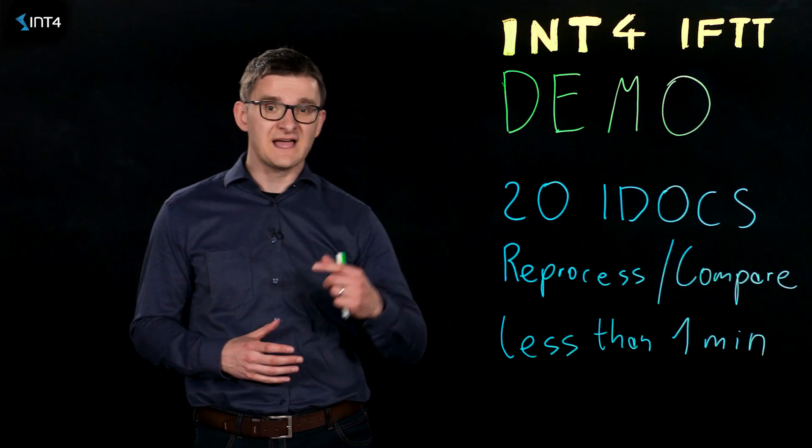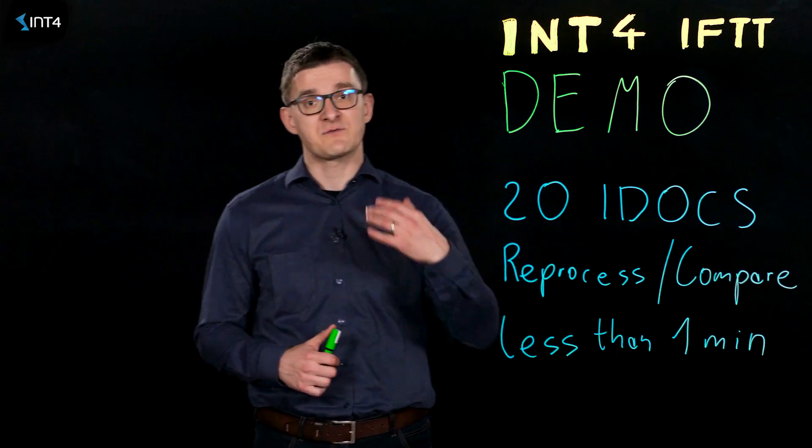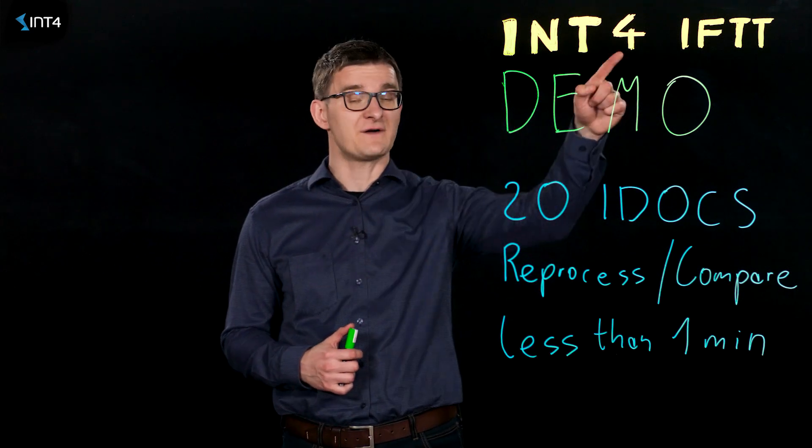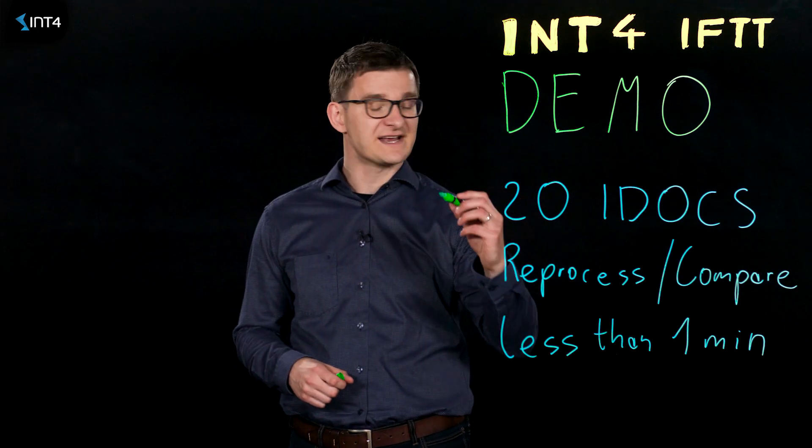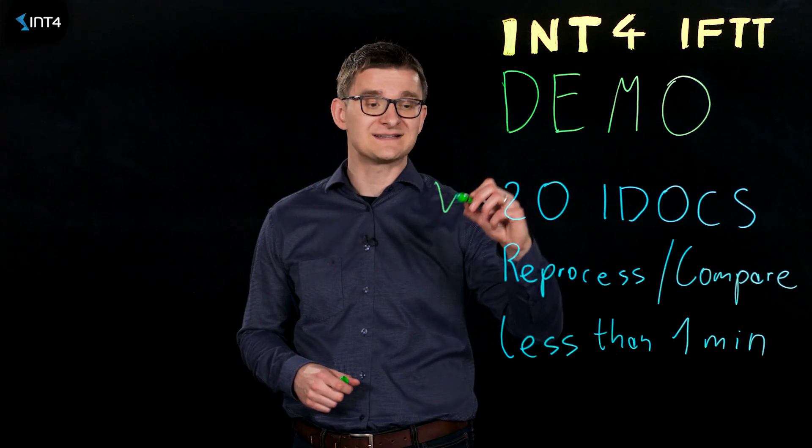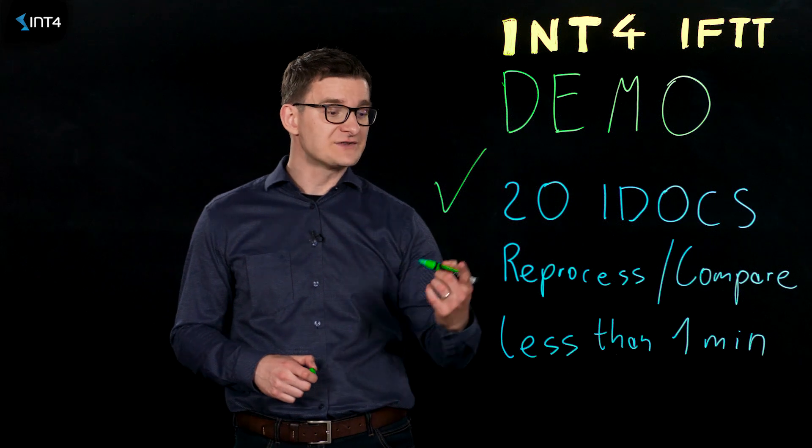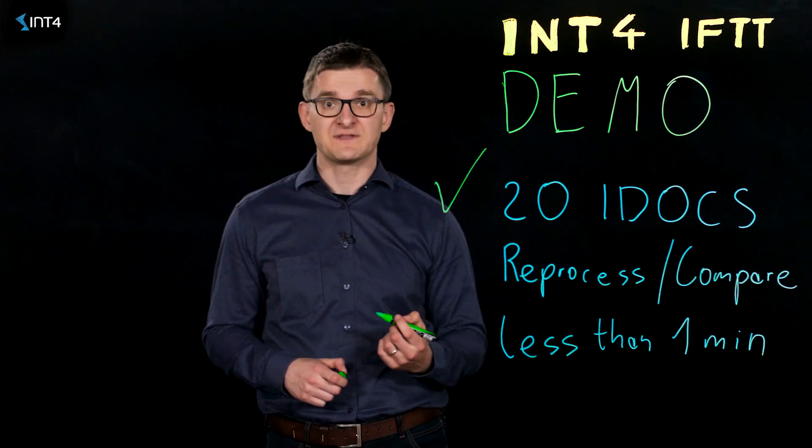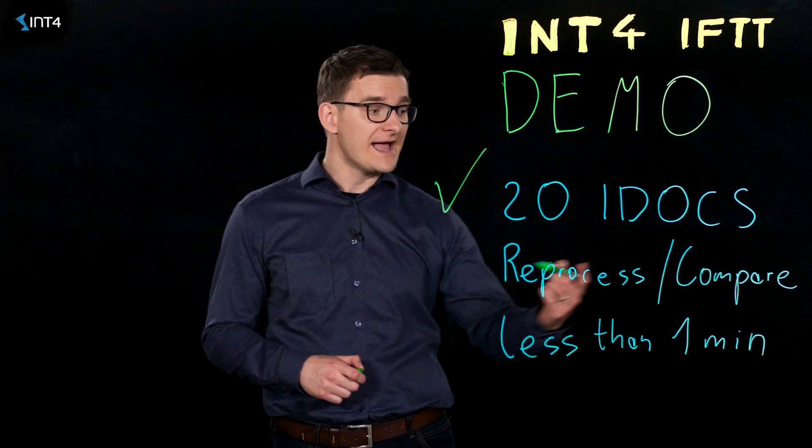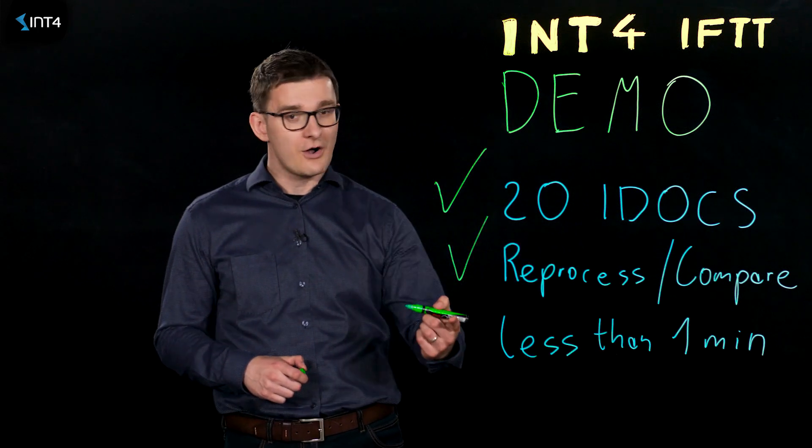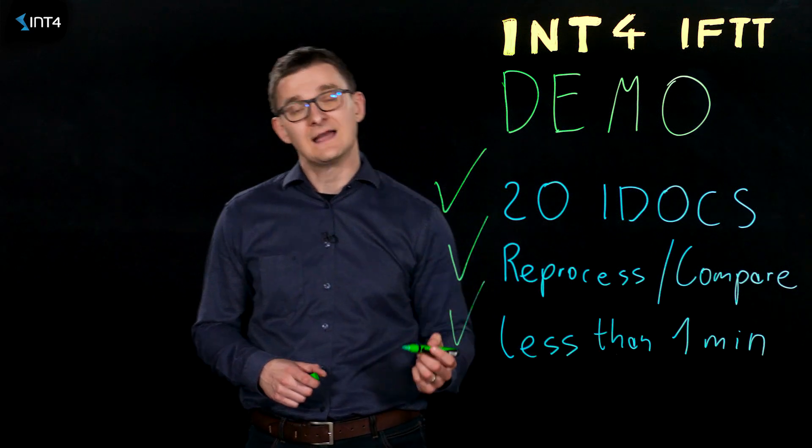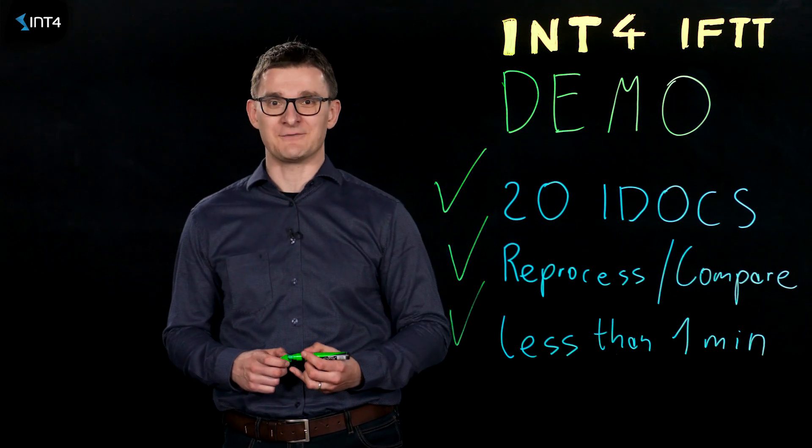In the demo, I would like to show you how we can rerun a set of transactions with the use of INT4IFTT. What we will do exactly is that we will take 20 IDOCs, which created sales orders. We will rerun them and reprocess them with the use of INT4IFTT, and compare the business objects before and after the conversion. Hopefully, we will do that in less than one minute. Please join me to see the demo.